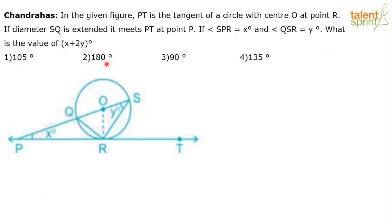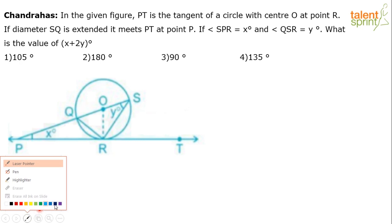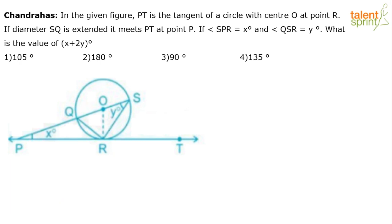The options given are 105, 180, 90, or 135. Let's discuss this. We are looking for the value of X plus 2Y.